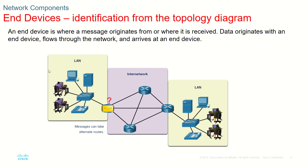In a network, there will always be end devices at the end of the network. As you can see here, this is a PC or personal computer. We also have a server — it can be a web server serving HTML or web pages, an email server facilitating email communication, or a file server providing file transfer services. These are also PCs, and here are IP phones, which are also end devices.